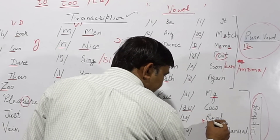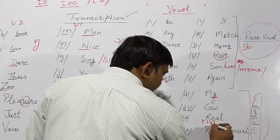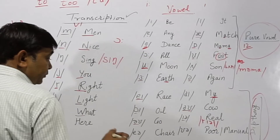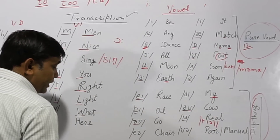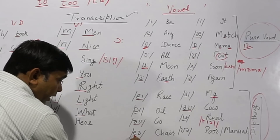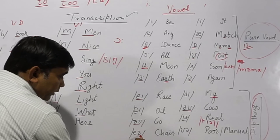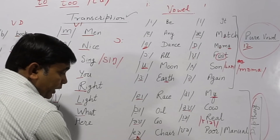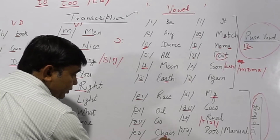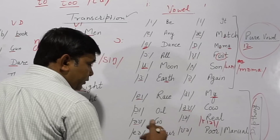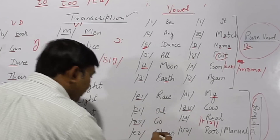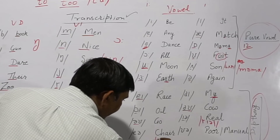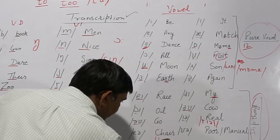Next is /ɪə/ — as in 'real', 'real'. This combines the /ɪ/ and /ə/ sounds to give 'real'. Then /eə/ — as in 'chair', 'chair'. So for example the phonetic transcription of 'chair' uses this /tʃ/ and this /eə/ sound.